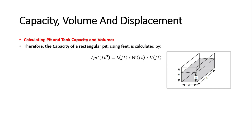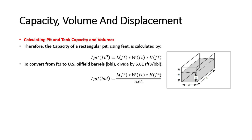We can calculate the capacity of a rectangular pit using all units in feet, so the volume will be in cubic feet. The equation is: length times width times height, all units in feet. Since the capacity of oil field tanks is measured in barrels, we need to convert from cubic feet to barrels by dividing the result by 5.61. So: capacity = (L × W × H) / 5.61.